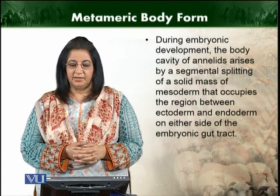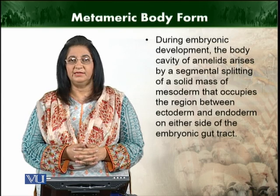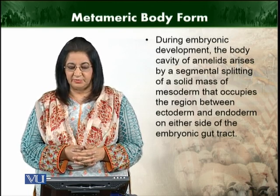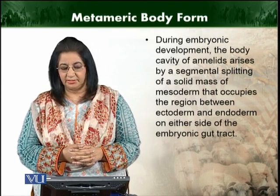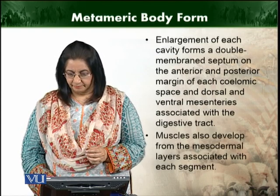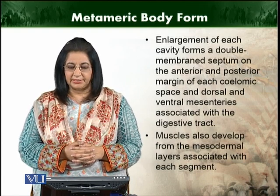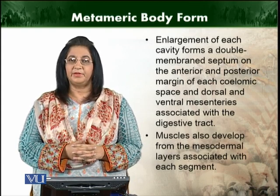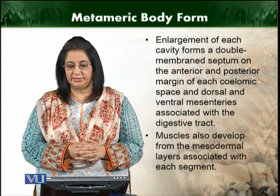During embryonic development, the body cavity of annelids arises by splitting of segments, or solid mass of mesoderm, that occupies the region between ectoderm and mesoderm on either side of the embryonic gut. This usually forms a double membrane septum, both on the anterior and posterior side of the animal.